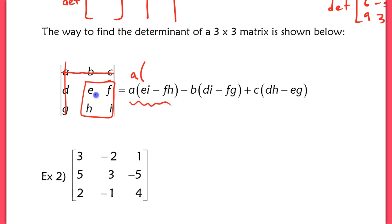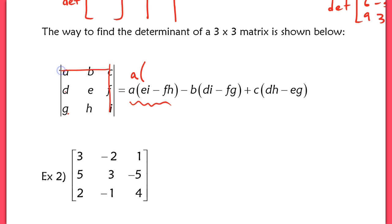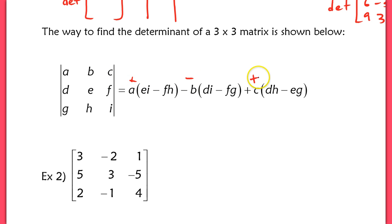So A times (EI minus FH). Then for B, you cross out B's row and column, and you're left with D, F, G, I — so that gives you DI minus FG. Finally for C, cross out C's row and column, leaving D, E, G, H — so you get DH minus EG. Notice the pattern: positive, then negative, then positive.